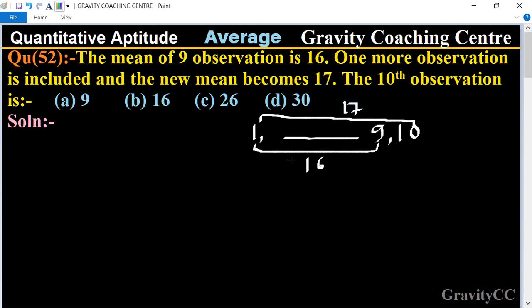So first we will find the sum of the nine observations by multiplying the average by 9. Then we will multiply the new average by 10 to get the sum of 10 observations. Therefore, what is the 10th observation?